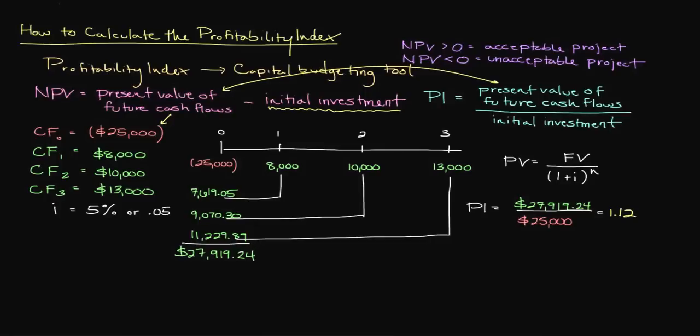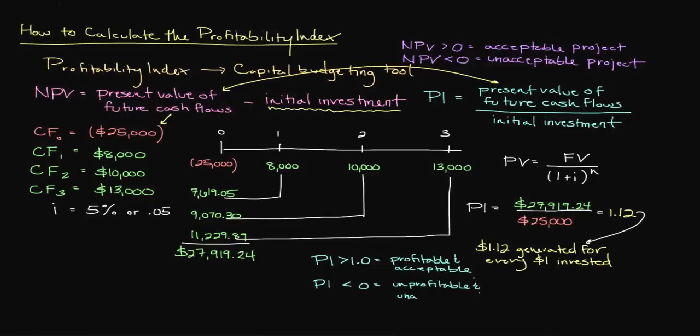This ratio can be expressed as we generate $1.12 for every dollar that we invest in this project. In order to determine whether or not the project is acceptable or at least worth considering, we use the following. A profitability index greater than 1 is profitable and considered to be an acceptable project. A profitability index less than 1 is unprofitable and not considered to be an acceptable project.